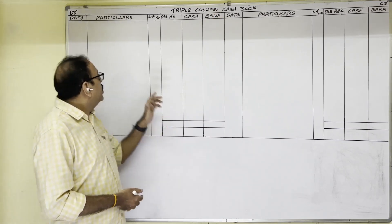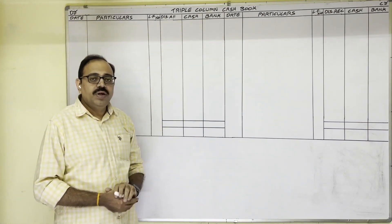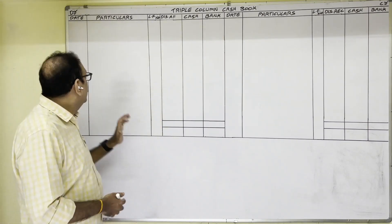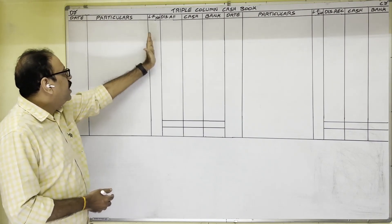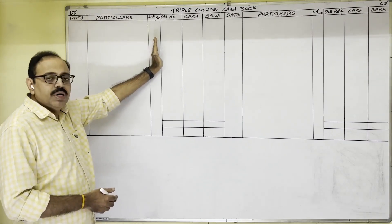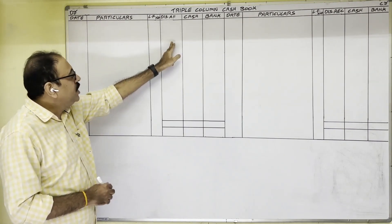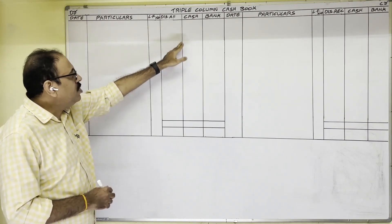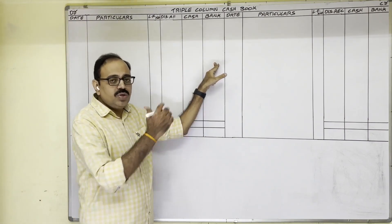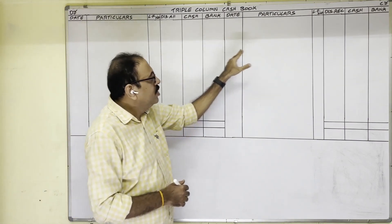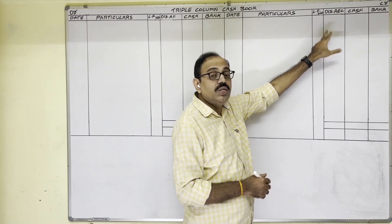There is a debit side and a credit side. On the debit side you have: date column, particulars, LF (ledger folio) number, discount allowed, cash, and bank. The credit side is also the same. The only difference is that instead of discount allowed, there is a discount received column.